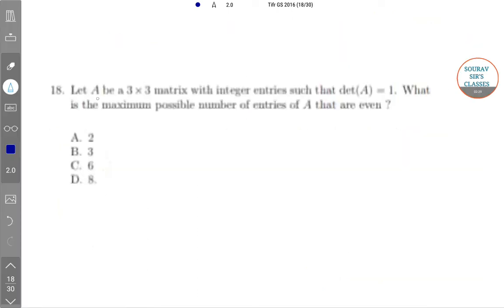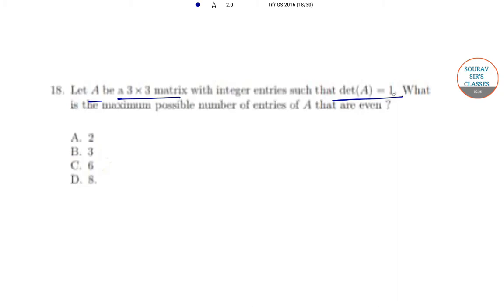The next question is: Let A be a 3×3 matrix with integer entries such that det(A) = 1. What is the maximum possible number of entries of A that are even? Now let A = [a, b, c; d, e, f; g, h, i].